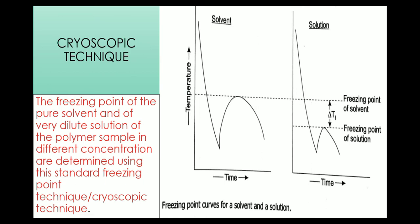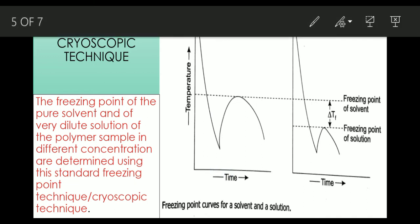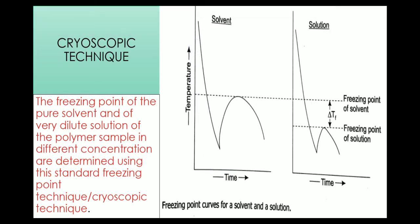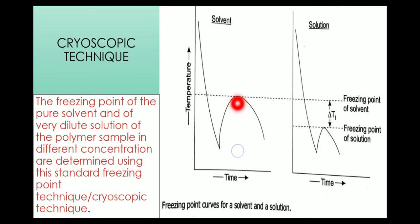For example, if we are taking naphthalene, it is supercooled to a temperature about 5 degrees Celsius lower than the freezing point and then we start stirring the supercooled liquid. The changes can be seen in this first graph. Here, the temperature first decreases, then at a point it starts increasing, reaches a maximum value, and then falls. This maximum temperature attained is the freezing point of the pure solvent.